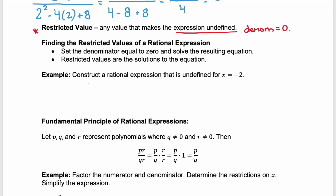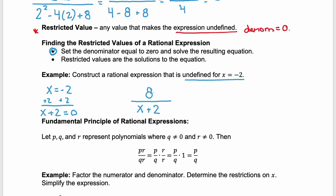Let's look at an example. We're going to construct a rational expression that's undefined for x equals negative 2. Well, if x equals negative 2, we can add 2 to both sides, and we know that x plus 2 equals 0. Remember step 1 of finding that restricted value said to set the denominator equal to 0, and that solution gives you that restricted value. We have x plus 2 equals 0, so our denominator, if it's x plus 2, would have a restricted value of negative 2. The numerator doesn't matter — the restriction is only based on that denominator. So I'll put my favorite number, 8, as the numerator. This would be a rational expression that's undefined when x equals negative 2.